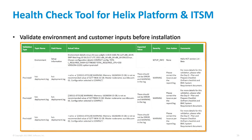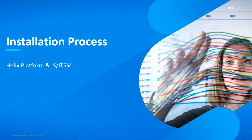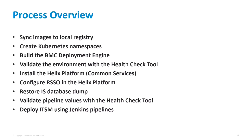Now we'll look at what's required to actually do the installation. These are the high-level steps once you've got your Kubernetes cluster up and running. You'll need to sync images from containers.bmc.com to your own local registry — Harbor, Artifactory, JFrog; we've had customers using many different types. We document how to use Harbor, but others are supported and do work. You'll need to create the various Kubernetes namespaces: one for the platform, one for ITSM, and one for Helix Logging. The deployment engine needs to be built — the documentation has detailed steps and a setup script to help.